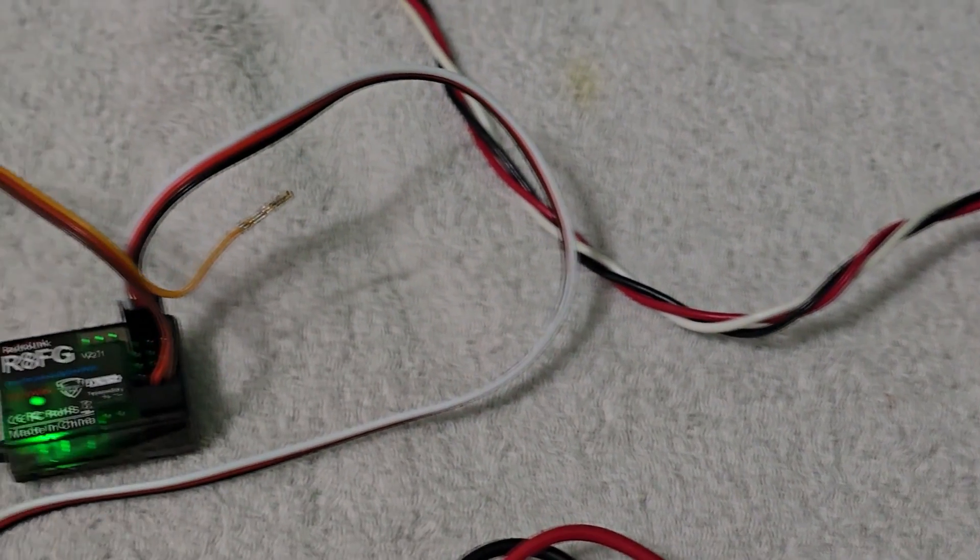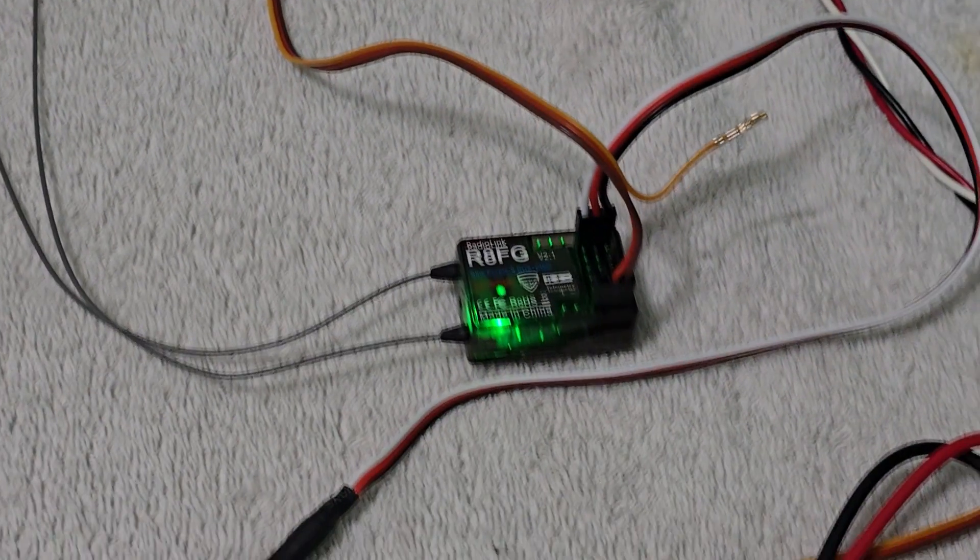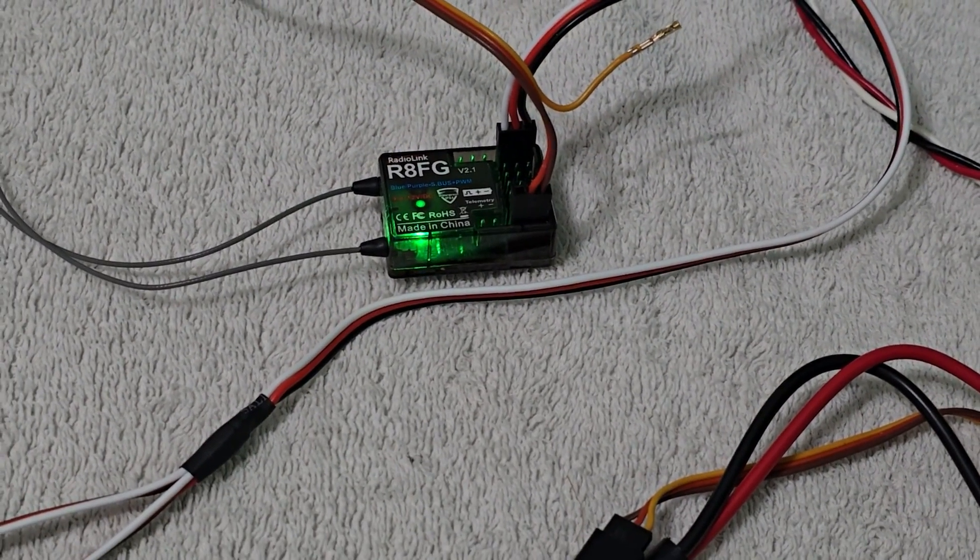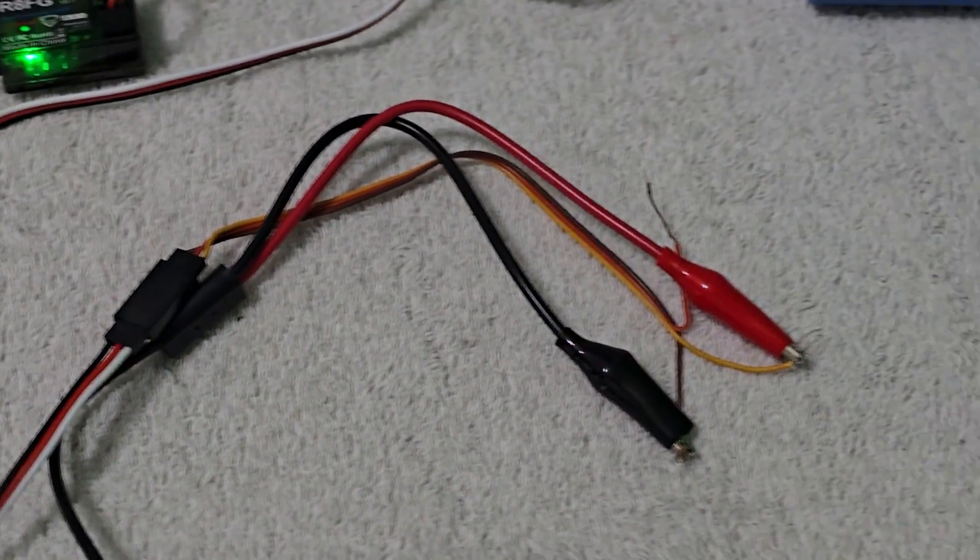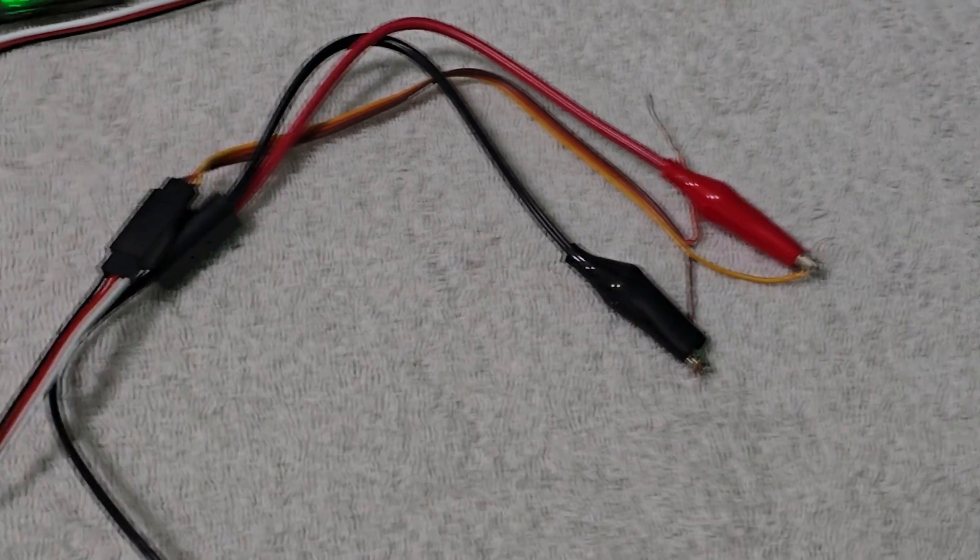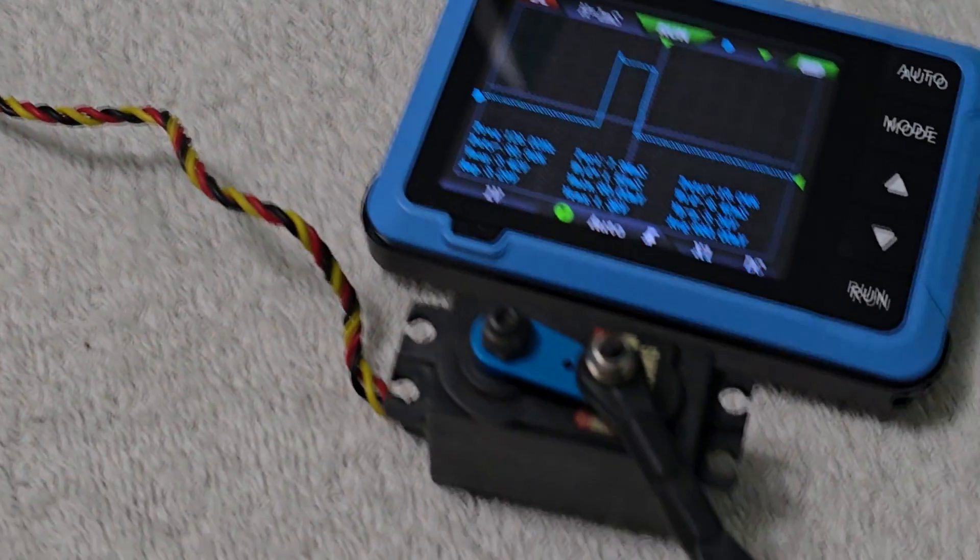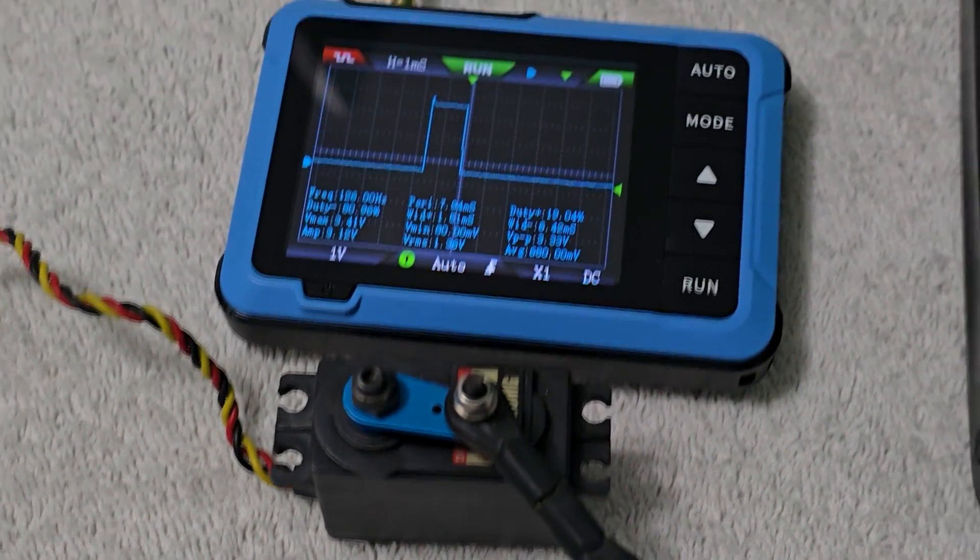It's a two-cell LiFe battery connected to our receiver, which is a RadioLink R8FG. From there we go into a splitter so we can split it to our oscilloscope, and on the other side we go to the servo so we can see what's going on as we move it.